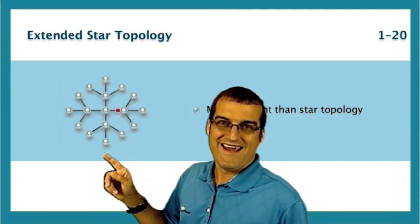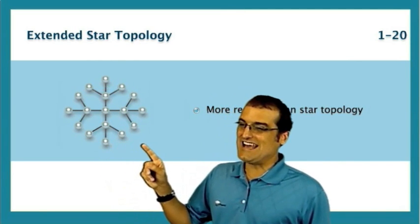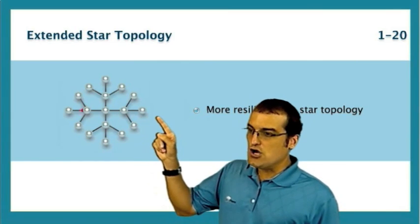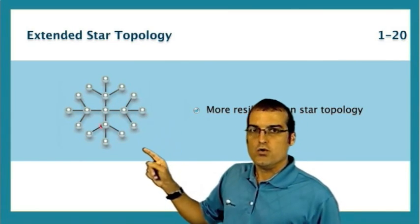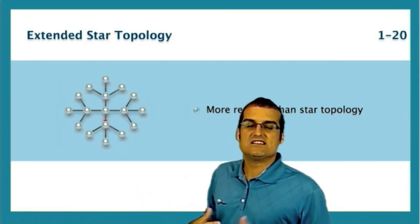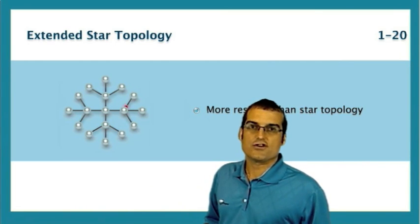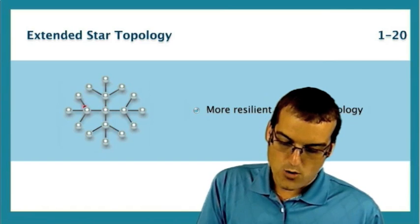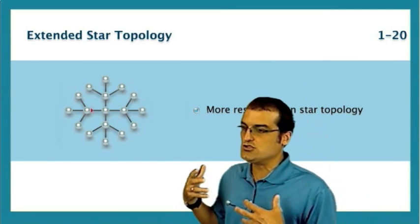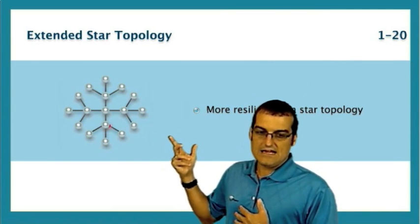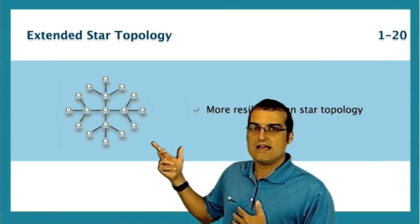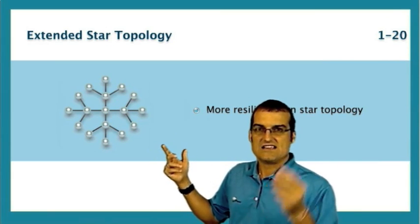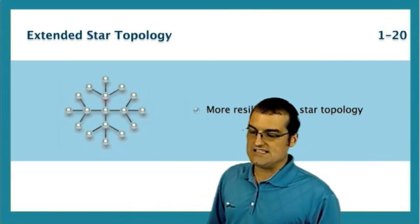In this extended star topology, notice it's more than one node connecting out to machines, and there's some measure of redundancy built in. Once again, I want you to be able to draw this out. If I show you this in an exam environment, within seconds you should tell me this is the extended star.